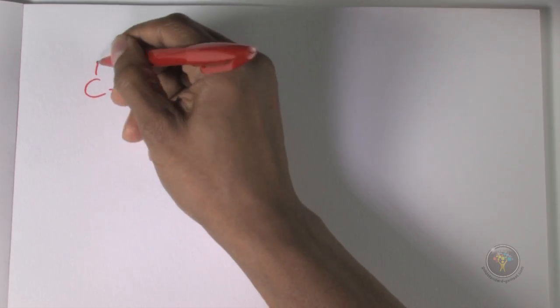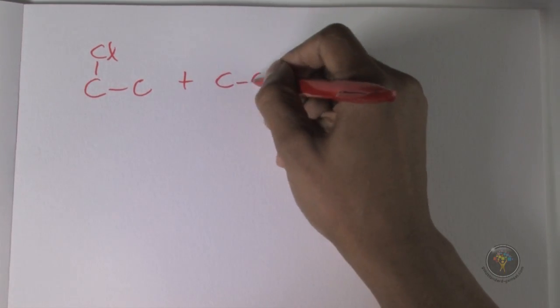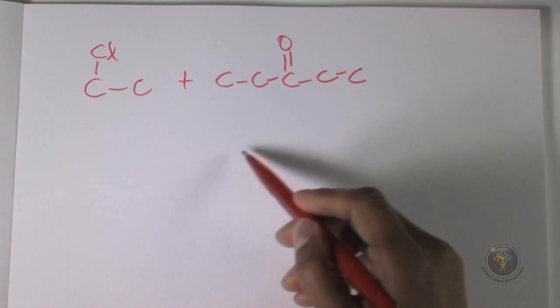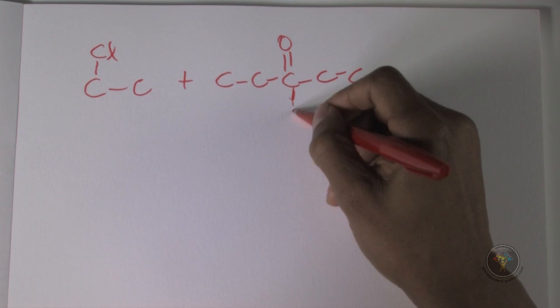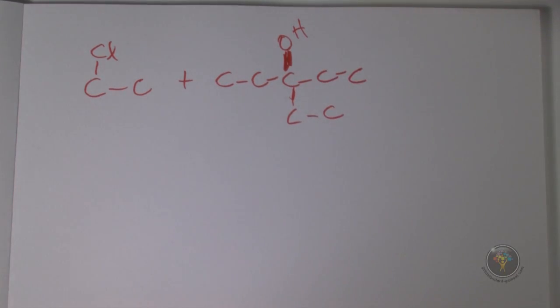Question 98: an alcohol shown is produced by a Grignard reaction. The question asks which pair of compounds cannot produce this alcohol. Testing A: chloroethane plus 3-pentanone (1-2-3-4-5, ketone at position 3). The delta-negative carbon attacks position 3, electrons go up to OH — the resulting structure does not match the target starting compound.